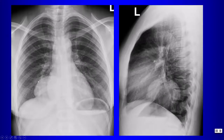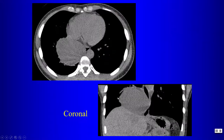Another example: a large round mediastinal lesion with fluid attenuation on CT, in contact with the esophageal wall. This again was an esophageal duplication cyst.